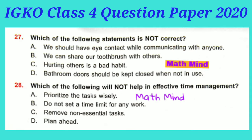Question No. 27: Which of the following statements is not correct? Option B is correct: 'We can share our toothbrush with others.' This is not correct. Question No. 28: Which of the following will not help in effective time management? Option B is correct: Do not set a time limit for any work.